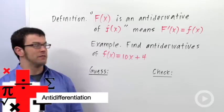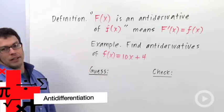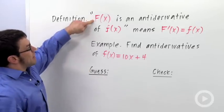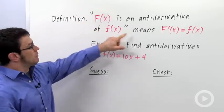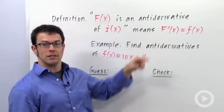I want to talk about how to find antiderivatives. So let's recall what an antiderivative is. Capital F of x is an antiderivative of little f of x, means that capital F prime equals little f.